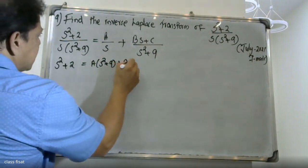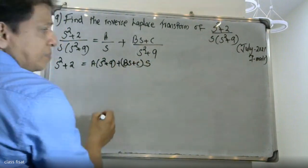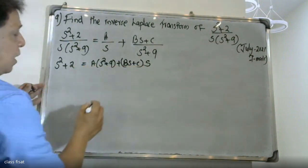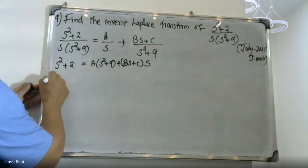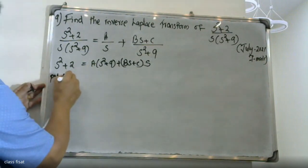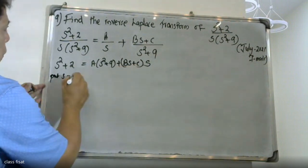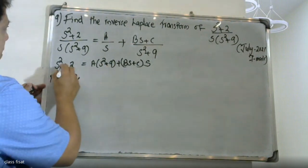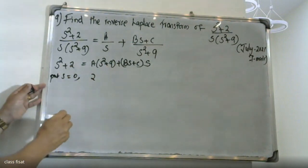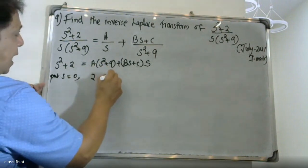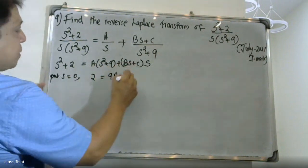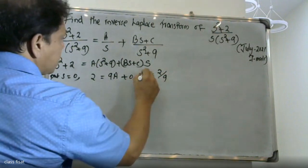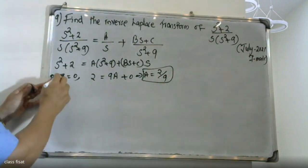On the right-hand side we have A(S² + 9) plus (BS + C) into S. Now substituting S equal to 0: left-hand side gives 2, right-hand side gives 9A. Therefore A is equal to 2 by 9. The first constant A equals 2/9 — this is the substitution method.